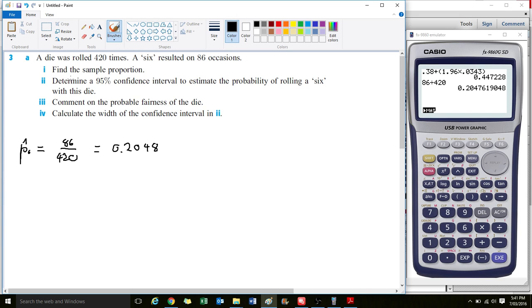Now determine the 95% confidence interval. The 95% confidence interval requires our formula, and for that we need the standard deviation, which equals the square root of PQ over N. P equals 0.2048, so Q equals 1 minus 0.2048, which equals 0.7952.